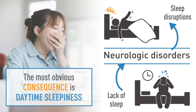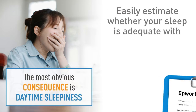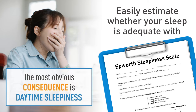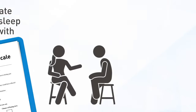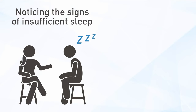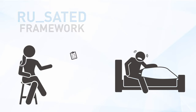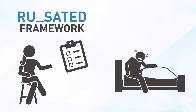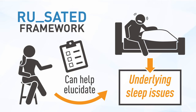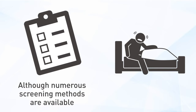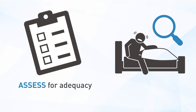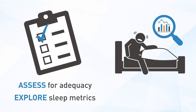The most obvious consequence of inadequate sleep quantity or quality is daytime sleepiness. The Epworth Sleepiness Scale is a quick and easy way to estimate whether your sleep is adequate. Noticing the signs of acute and chronic insufficient sleep is helpful in determining whether a sleep problem is present. A simple validated framework, the RU SATED framework, can help elucidate potential underlying sleep issues in ourselves and others.